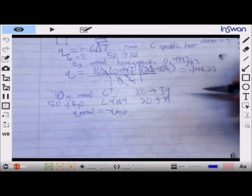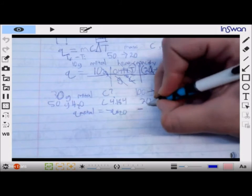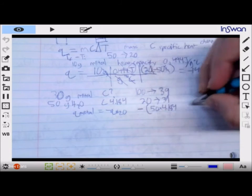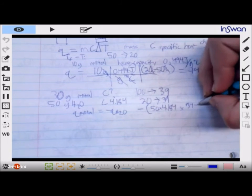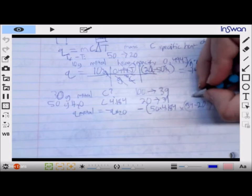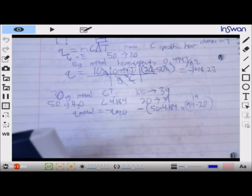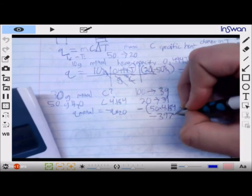So calculating the q of the water, we're going to put that negative up. Negative 50 times 4.184 times 39 minus 20, or 19. So 50 times 19 times 4.184 would get us how much energy? 3974.8.